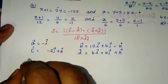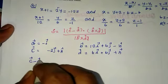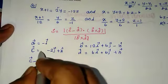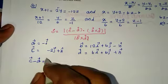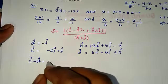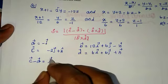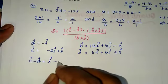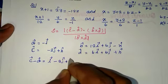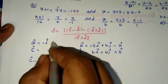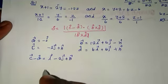Now, c vector minus a vector equals (0 minus 1) minus (minus 1), that is plus 1, giving i vector minus 2j vector plus k vector.